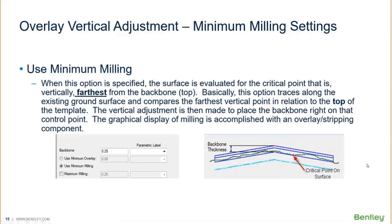The next setting is the use minimum milling option. When this option is specified, the surface is evaluated for the critical point that is vertically farthest from the top of the backbone. You may want to use this if you have potholes or low points in the surface. This option traces along the existing ground, compares that farthest vertical point in relation to the top of the template, places the template at that location, and then makes the adjustment upwards based on your backbone value and possibly the maximum milling option.